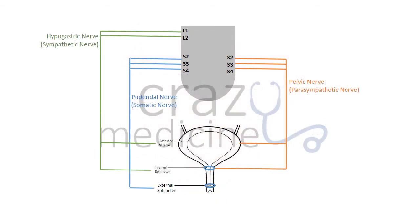This is the image of normal innervations of bladder. I have tried to simplify it. It consists of three nerves: hypogastric nerve, pudendal nerve, and pelvic nerve.